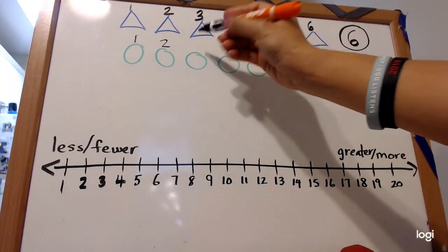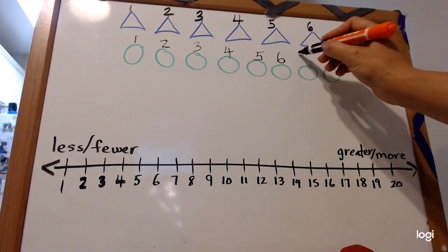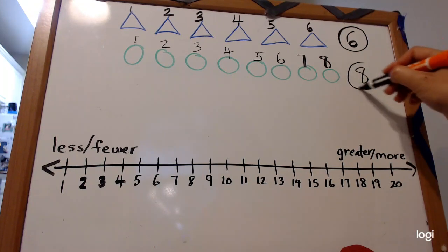One, two, three, four, five, six, seven, eight. Then we write the number eight and we circle it.